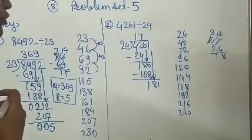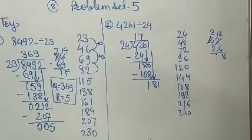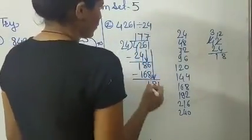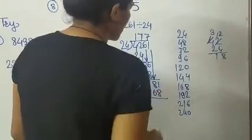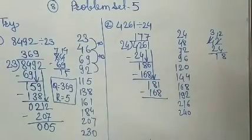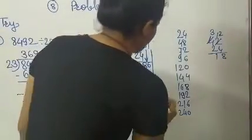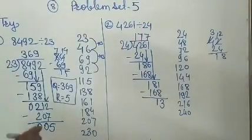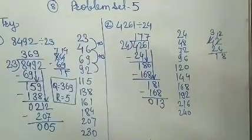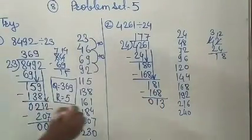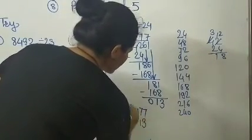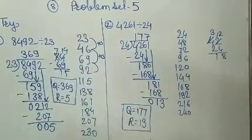Again in the table of 24, is 181 there? No. Then what is that? 168. So 7 times 24 is 168. Now: 11 minus 8 — after 8, count 11: 9, 10, 11 — that is 3. And 7 minus 6 is 1. So what is the remainder here? The remainder is 13. And what is the quotient? 171. So here we completed problems 1 and 3 in problem set 5. I hope you understand.